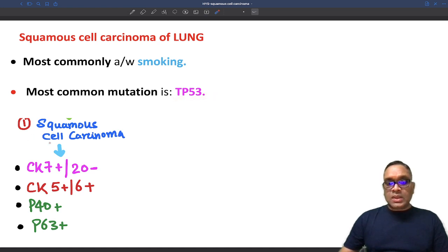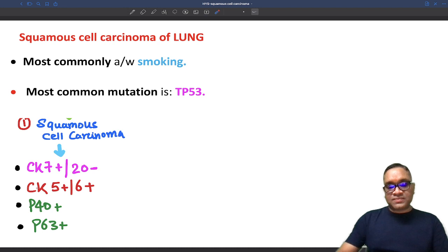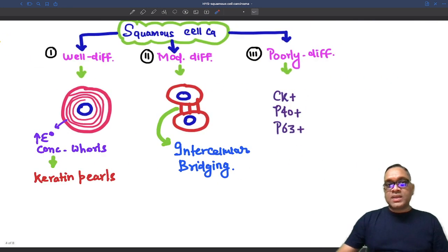Tumor Suppressor Gene Mutation. On immunohistochemical examination, remember they will be positive for cytokeratin 7 and 20 will be negative, so cytokeratin 7 positive, 20 minus. Cytokeratin 5 and 6 both will be positive, and there are two new markers we have to remember: P40 and P63. They are positive for Squamous Cell Cancer of the Lung.